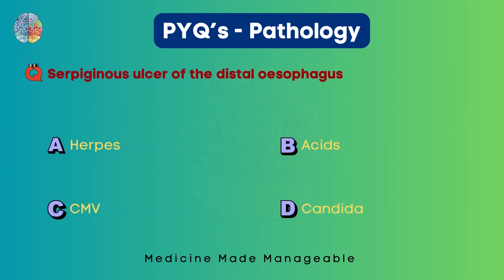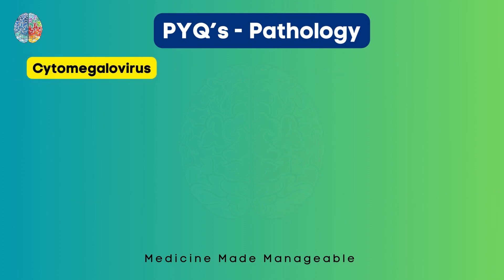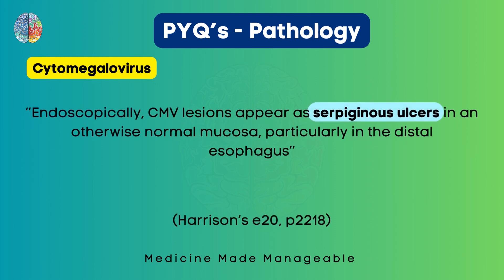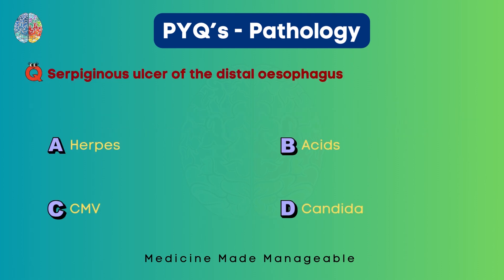Serpiginous ulcers of the distal esophagus are seen in herpes, acid, cytomegalovirus, or Candida. This is a fact-based question. The correct option is cytomegalovirus. Harrison's states: endoscopically, cytomegalovirus lesions appear as serpiginous ulcers in an otherwise normal mucosa, particularly in the distal esophagus. Remember that the location is the distal esophagus specifically, as this detail may be tested. Correct option is C.